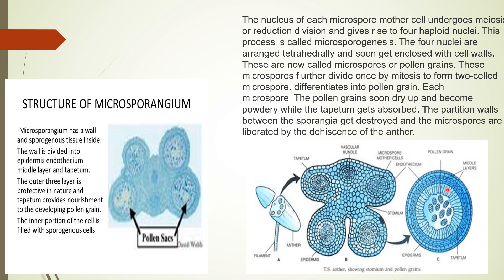Inside the four layers of the microsporangium there is sporogenous tissue. Each cell of the sporogenous tissue is a potential pollen mother cell (PMC), also called micro spore mother cell. These cells divide and give rise to microspores. The formation of microspores from the pollen mother cell through meiosis is known as microsporogenesis — this is a very important term to remember.